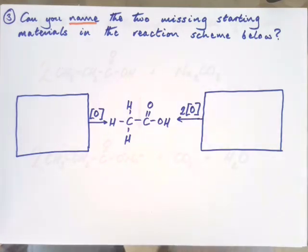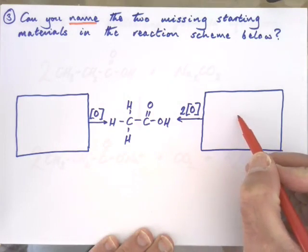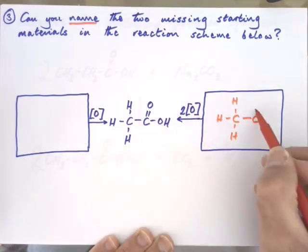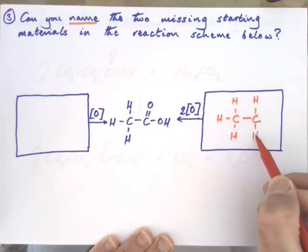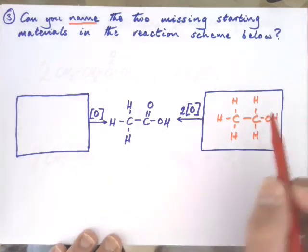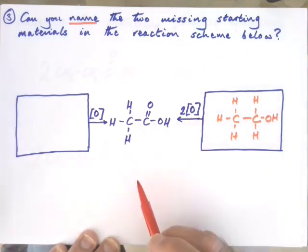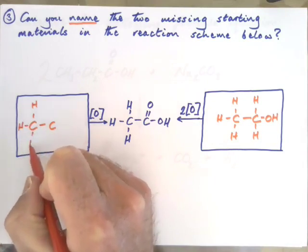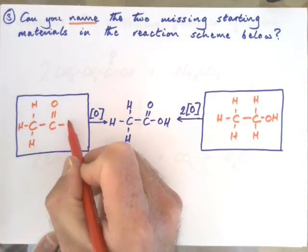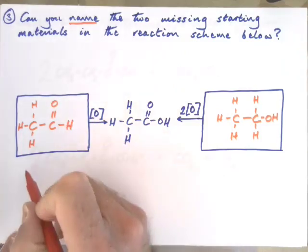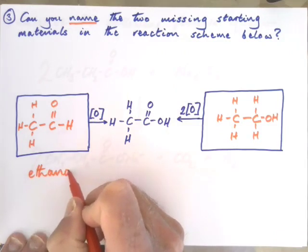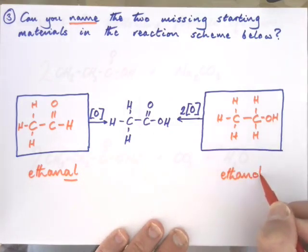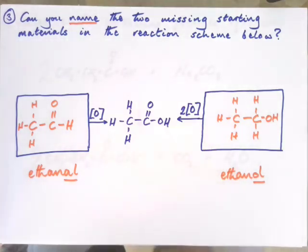Hopefully you found that section in your poster and identified both starting materials as having two carbons. On one side, a primary alcohol needs two lots of oxidation to become a carboxylic acid. On the other side, the functional group is a little bit more oxidised than an alcohol — and what we're dealing with there is an aldehyde. The aldehyde needs only one lot of oxidation to become a carboxylic acid, whereas the alcohol needs two.